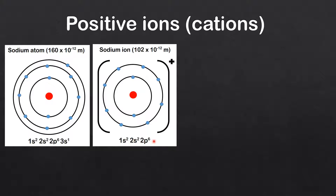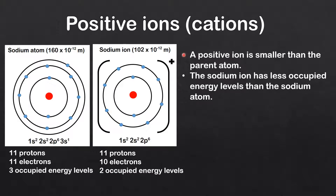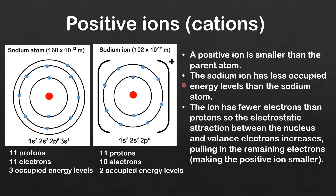So we've lost the outer electron and we only have two main energy levels. Comparing the atom and the ion: the atom has 11 protons, 11 electrons, and 3 occupied energy levels, while the ion has 11 protons, 10 electrons, and 2 occupied energy levels. So a positive ion is smaller than the parent atom. The ion has fewer electrons than protons — 11 protons and only 10 electrons — so the electrostatic attraction between the nucleus and valence electrons increases, pulling in the remaining electrons and making the positive ion smaller.